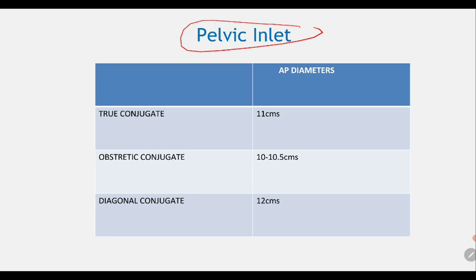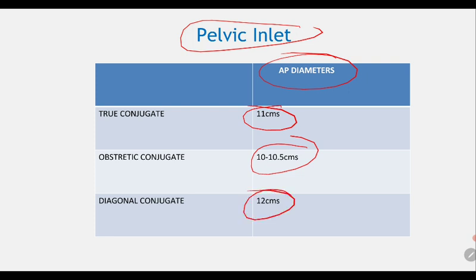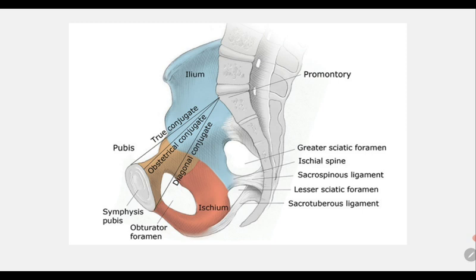At the pelvic inlet, there are three anterior-posterior diameters to remember: the true conjugate at 11 cm, the obstetric conjugate at 10 to 10.5 cm, and the diagonal conjugate at 12 cm. The true conjugate is measured from the upper border of the pubic symphysis to the midpoint of the sacral promontory.